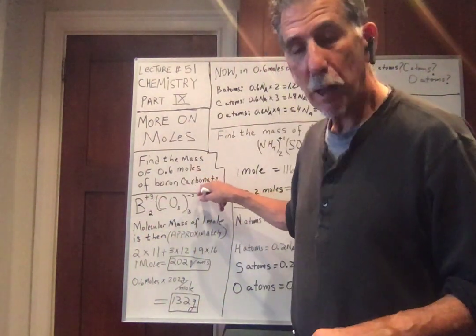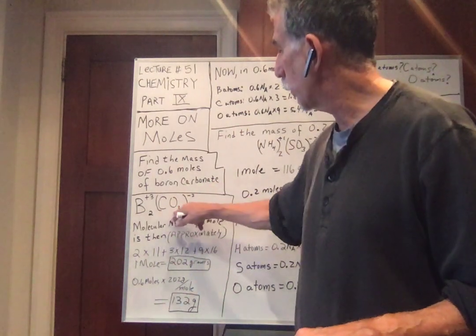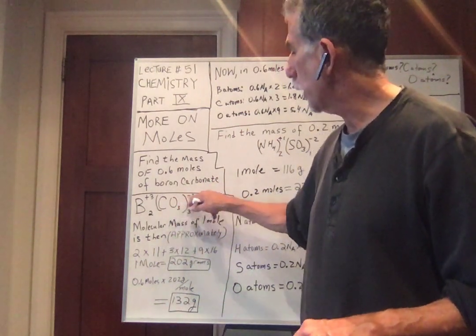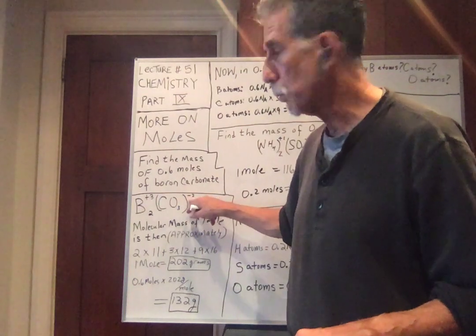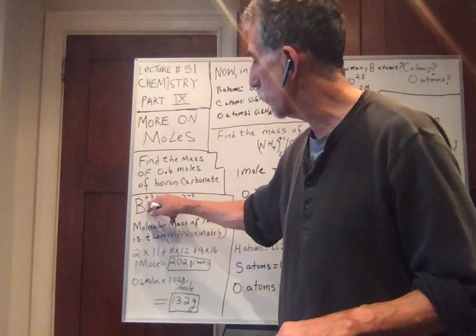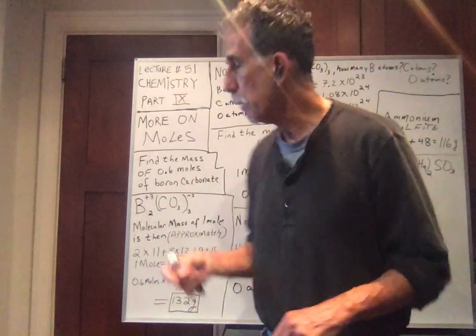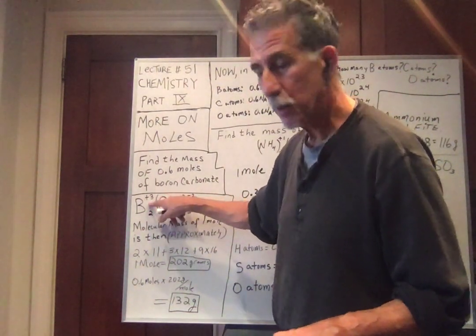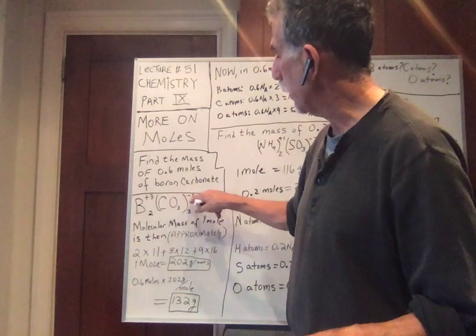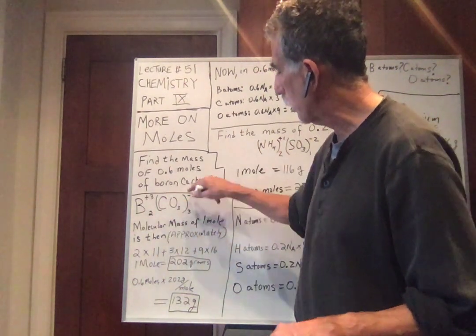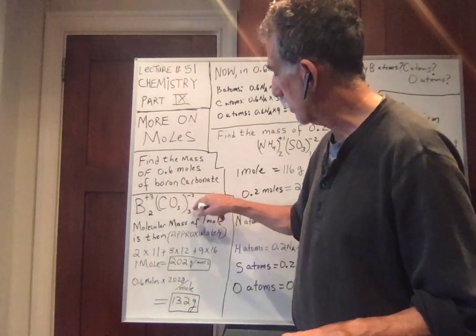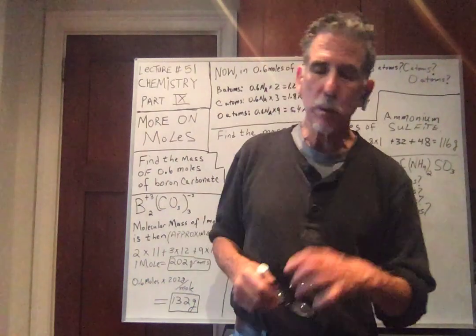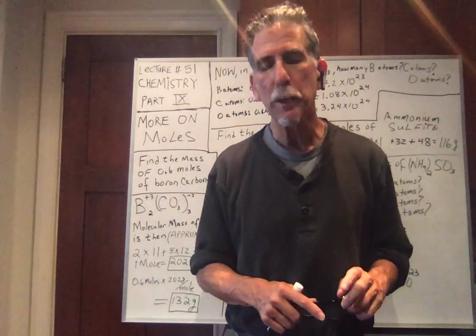The carbonate polyatomic ion is CO3 but it has a charge of minus 2. So this needs 2 electrons. Boron wants to give 3 electrons. Remember how we match this? We take 2 borons. So 2 times 3 gives 6 electrons. And the carbonate needs 2 electrons. So we take 3 carbonate ions to take 6 electrons. So that's the formula for boron carbonate.